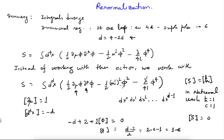Phi-squared is present in the mass term. Each phi has dimension (d-2)/2, so phi-squared contributes d-2. Together with the measure contributing minus d and m-prime-squared contributing 2[m'], setting the total to zero shows that m-prime has mass dimension 1.